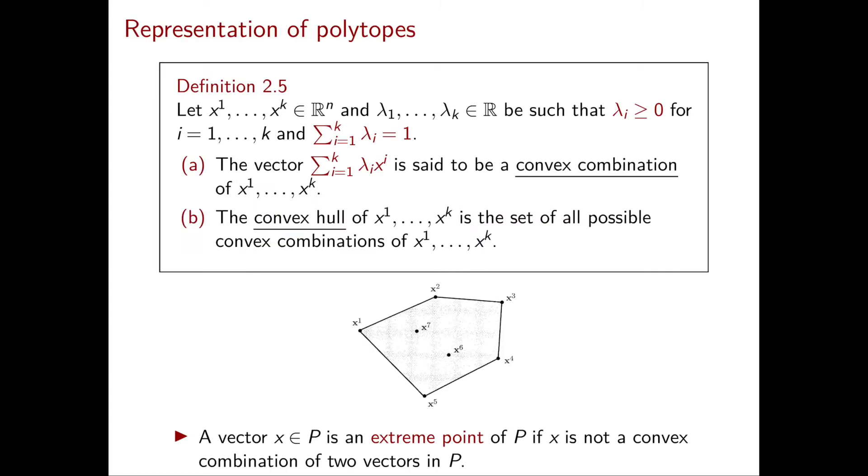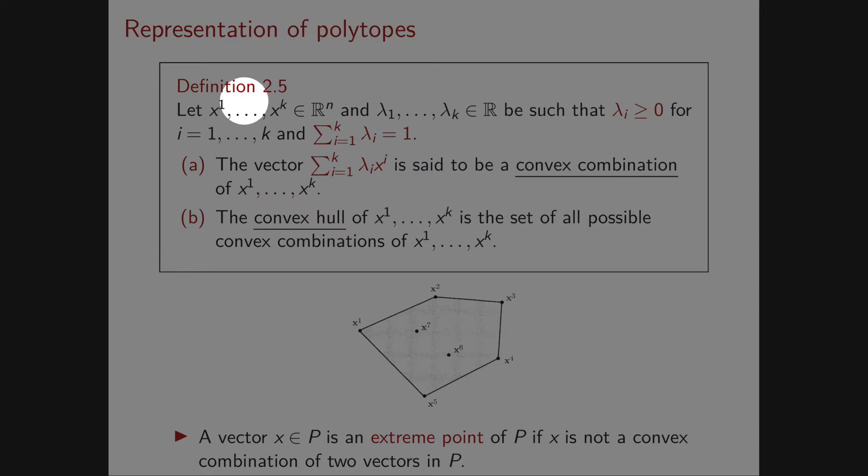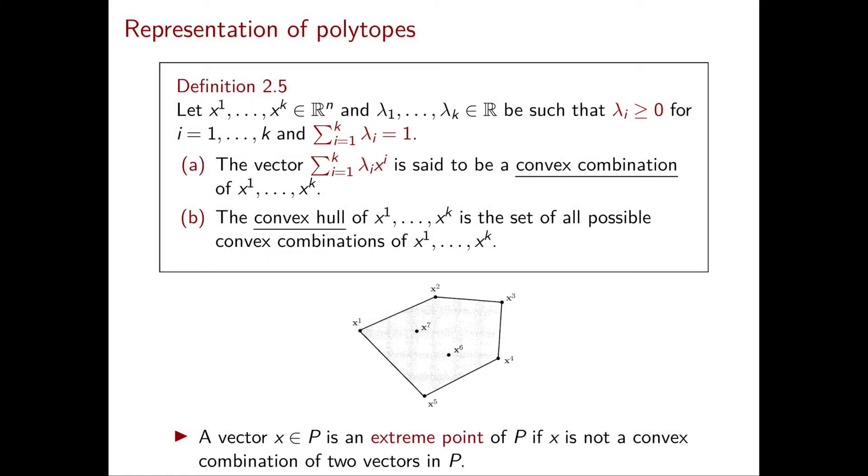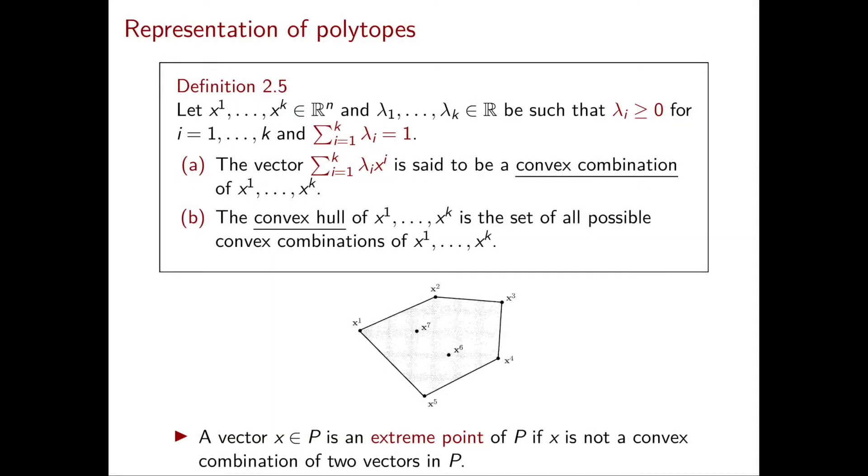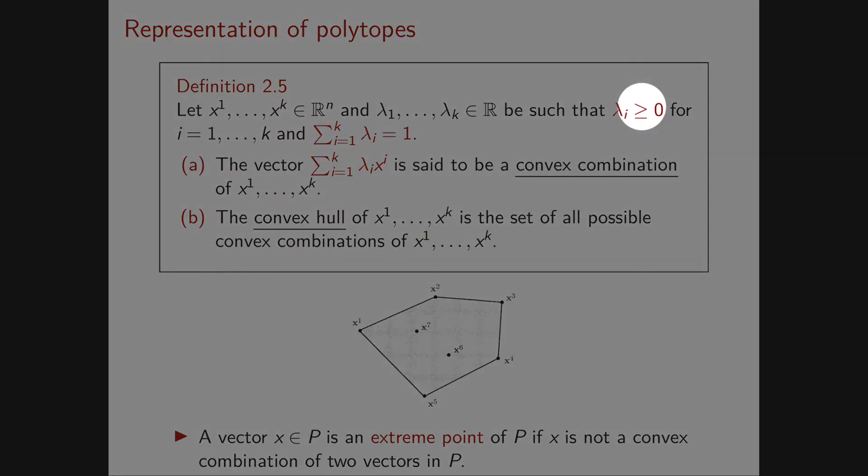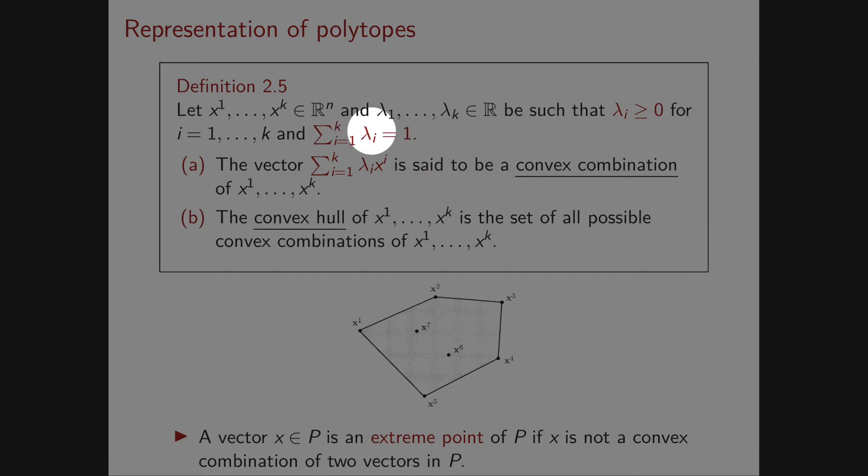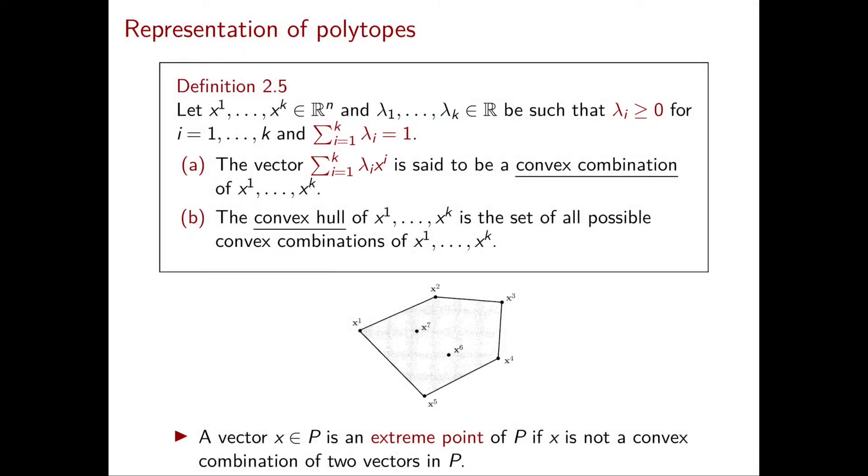The first thing we need is the definition of convex combination and convex hull. Consider k vectors in R^n denoted by x^1 until x^k, and k scalars λ₁ through λₖ in R. We assume that all the λᵢ are non-negative and sum to 1. Then the vector sum over all i from 1 to k of λᵢ times x^i is said to be a convex combination of the vectors x^1 until x^k.